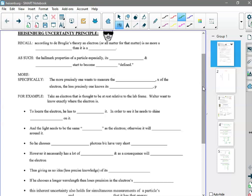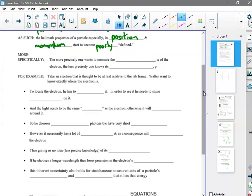So I've already talked about this. According to de Broglie, there is no more a particle than it is a wave. It's one or the other, but it's not like nature prefers one over the other. And as such, the hallmark properties of a particle, especially its position and its momentum, start to become poorly defined.